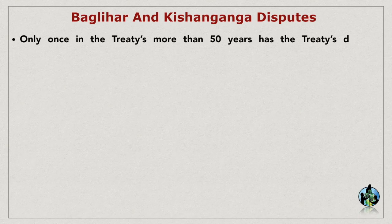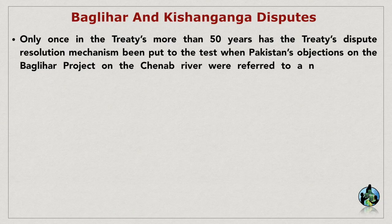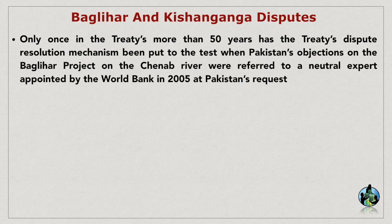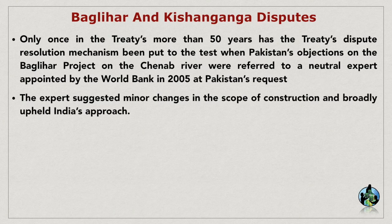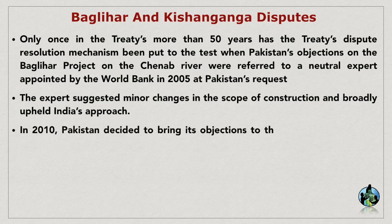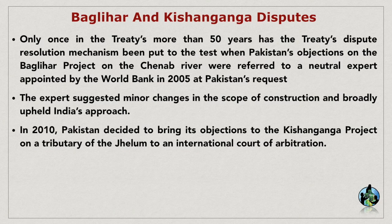Baglihar and Kishan Ganga Disputes: Only once in the treaty's more than 50 years has the treaty's dispute resolution mechanism been put to the test, when Pakistan's objections on the Baglihar project on the Chenab river were referred to a neutral expert appointed by the World Bank in 2005 at Pakistan's request. The expert suggested minor changes in the scope of construction and broadly upheld India's approach. In 2010, Pakistan decided to bring its objections to the Kishan Ganga project on a tributary of the Jhelum to an international court of arbitration.